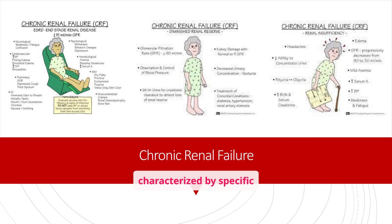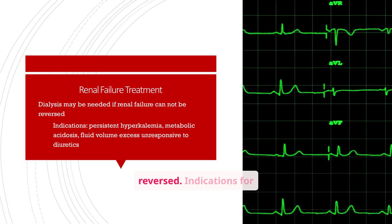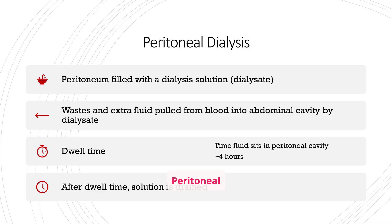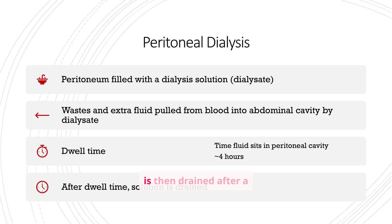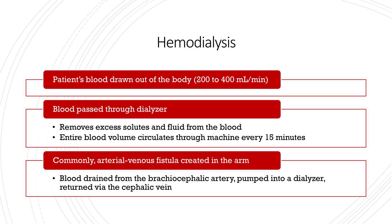Dialysis may be needed if renal failure cannot be reversed. Indications include persistent hyperkalemia, metabolic acidosis, and fluid volume excess unresponsive to diuretics. The ECG shows potential abnormalities that may be associated with renal failure. Peritoneal dialysis involves filling the peritoneum with a dialysis solution, or dialysate; wastes and extra fluid are pulled from the blood into the abdominal cavity, and the solution is drained after a dwell time of about four hours. Hemodialysis involves drawing the patient's blood out of the body and passing it through a dialyzer, which removes excess solutes and fluid. The blood is then returned to the body. An arteriovenous fistula is commonly created in the arm to facilitate blood access.